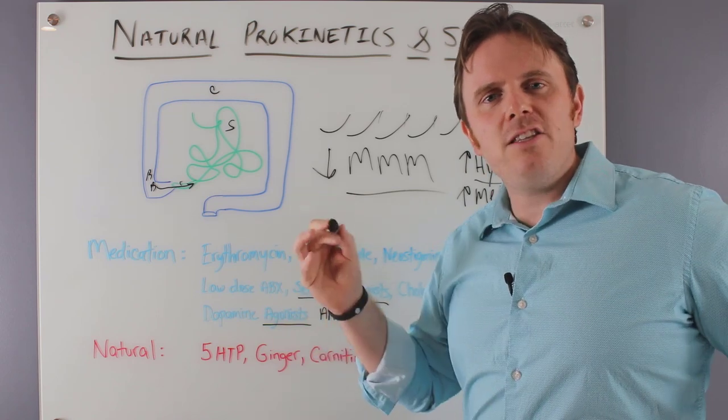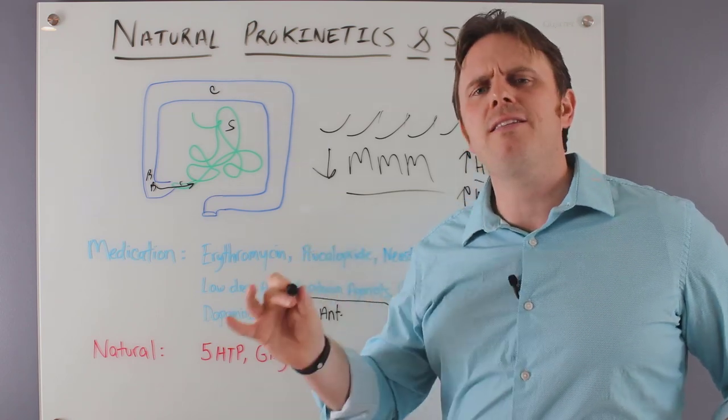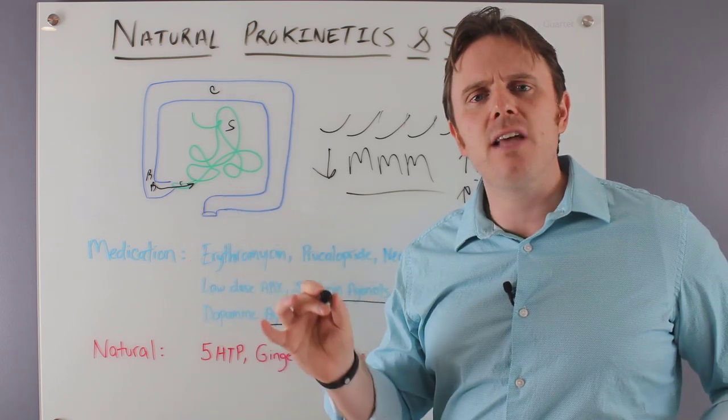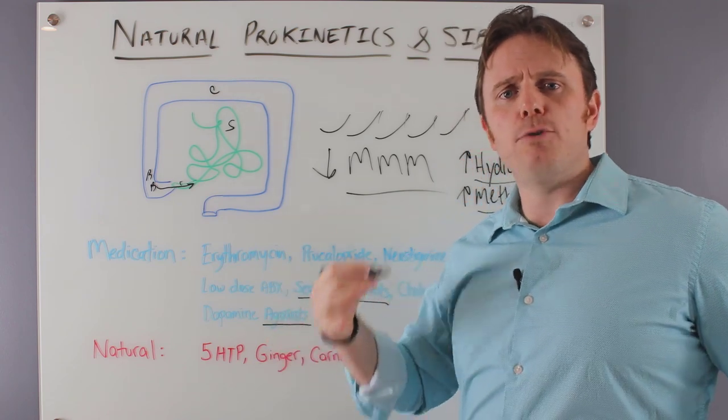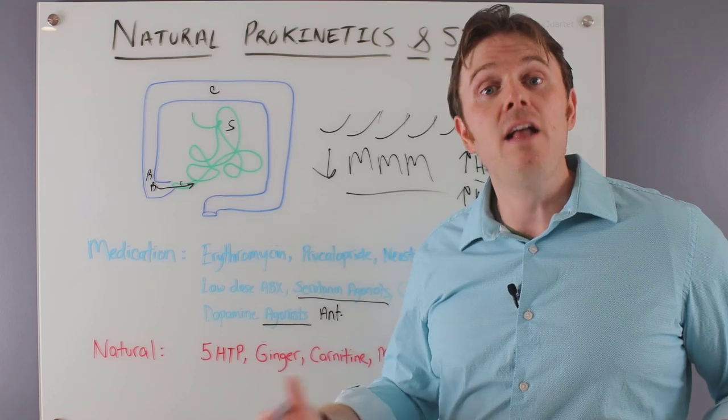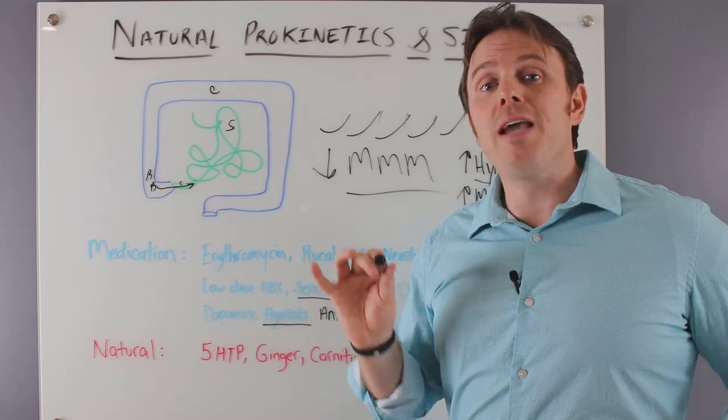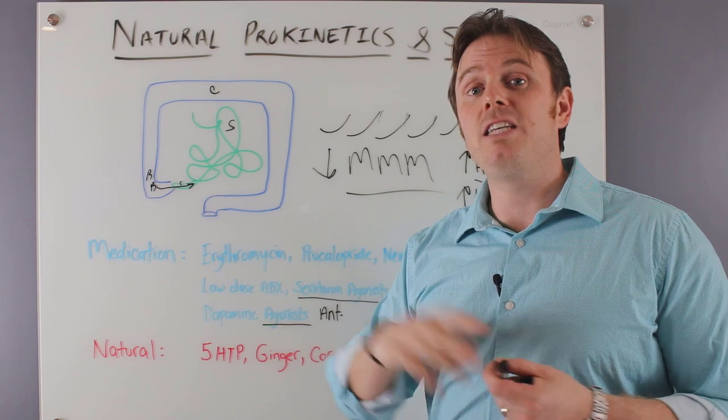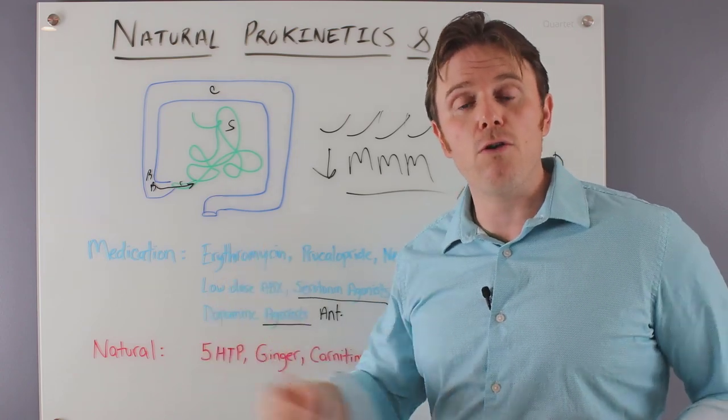Root cause, get to the underlying bacterial overgrowth. A lot of times it's a hydrochloric acid and an enzyme insufficiency. A lot of times good bacteria is very low as well. Beneficial probiotics are on the lower side. Those have to be supported. There could be other infections outside of just SIBO. There could be SIFO, small intestinal fungal overgrowth. There could be various parasites,